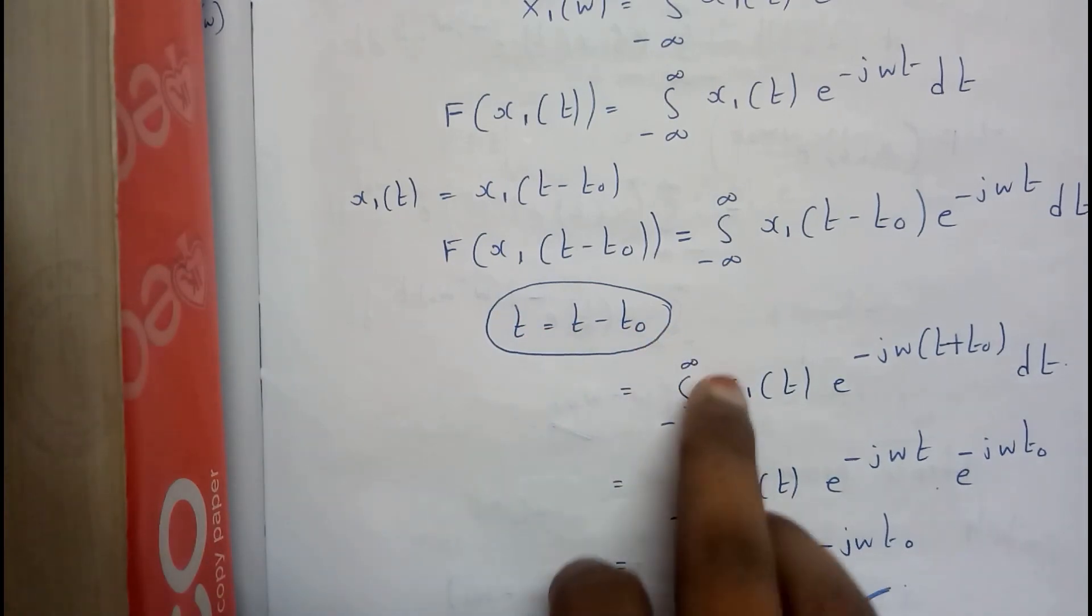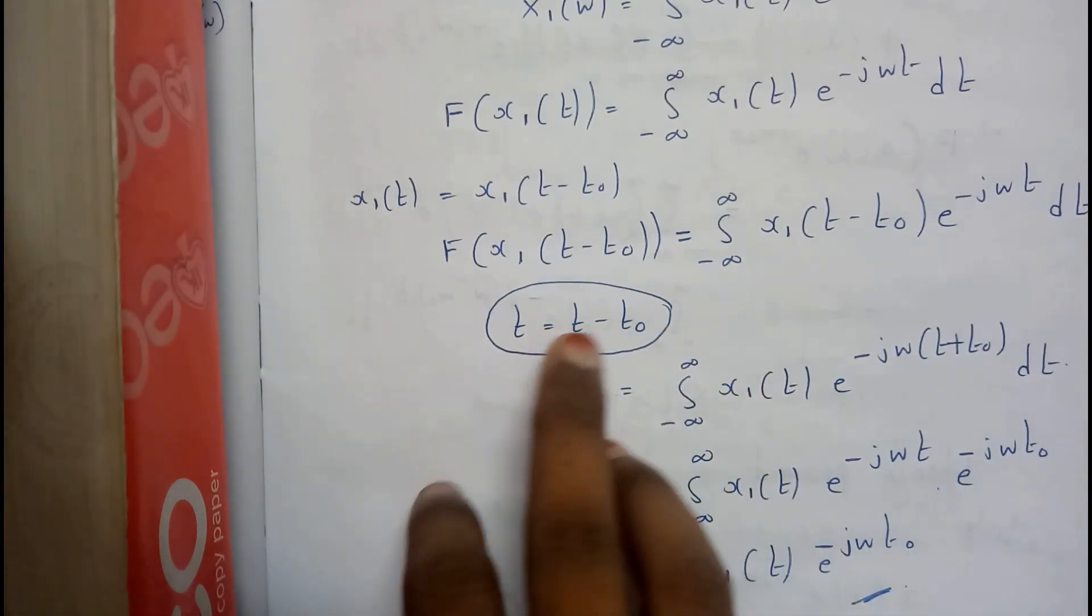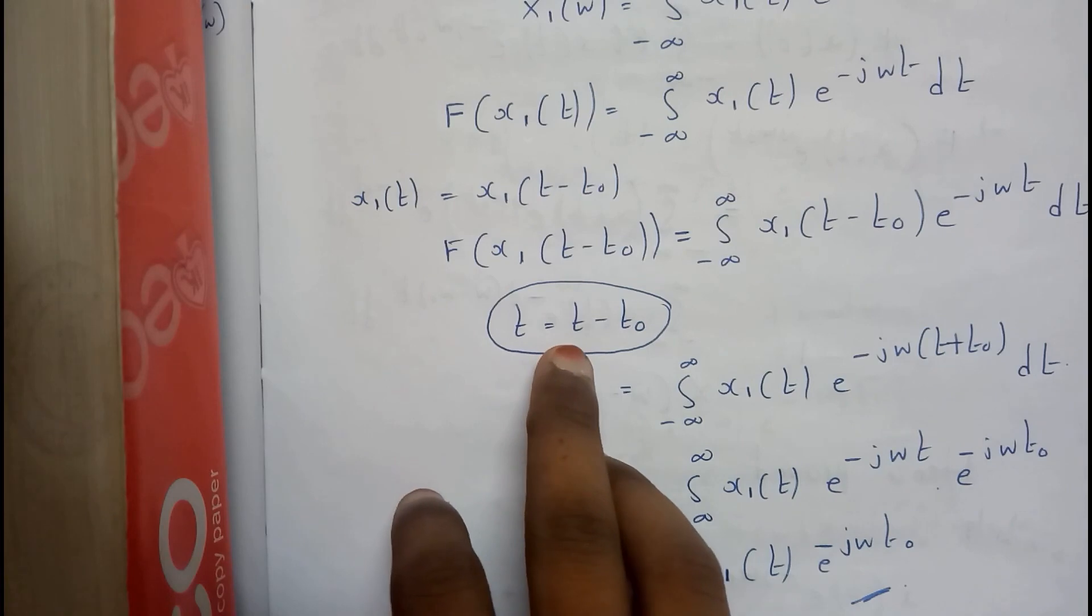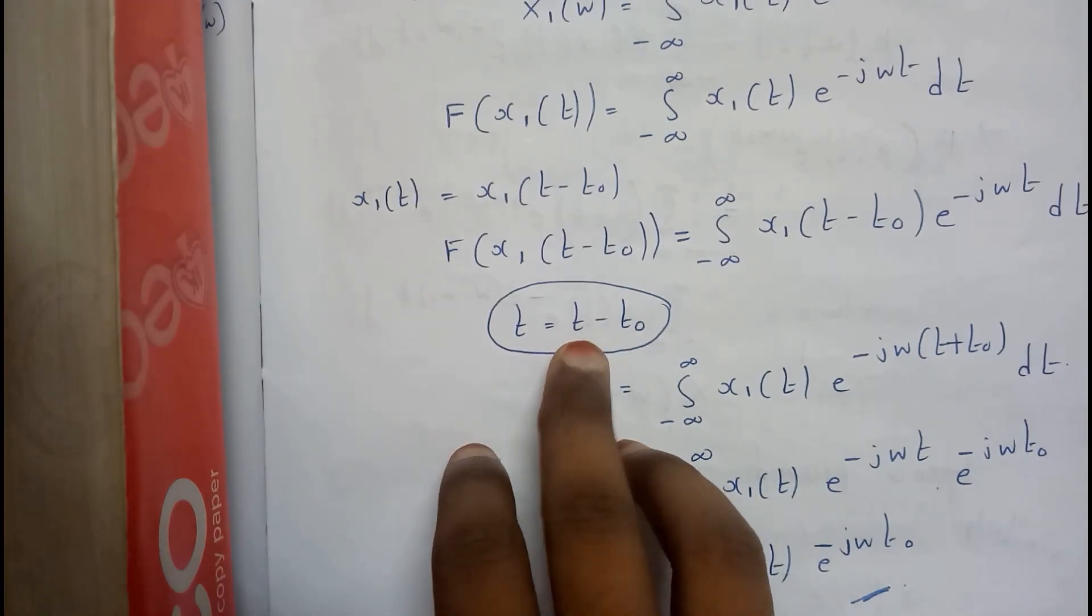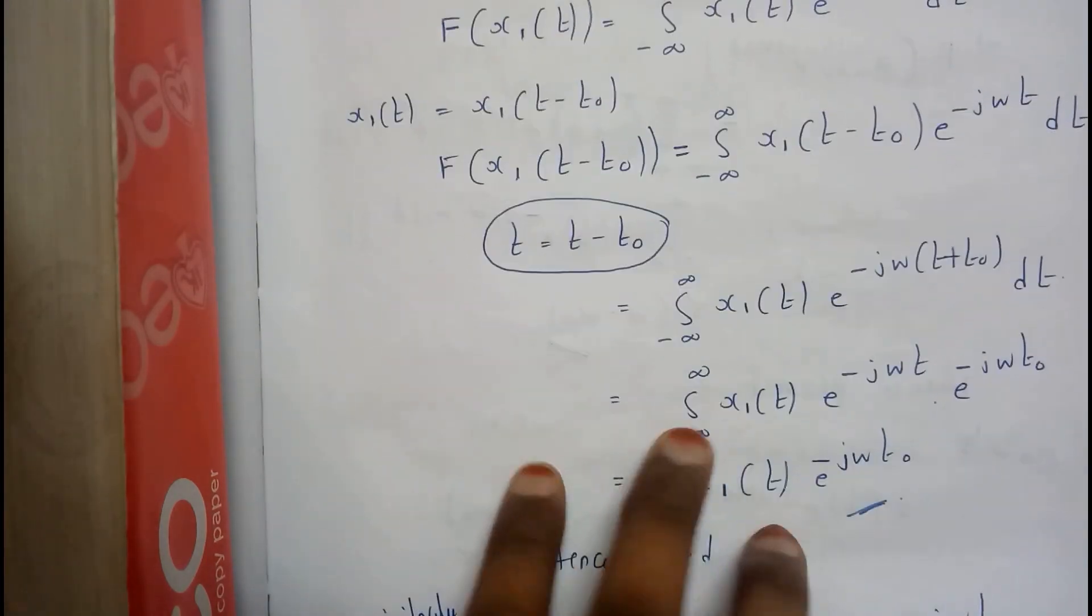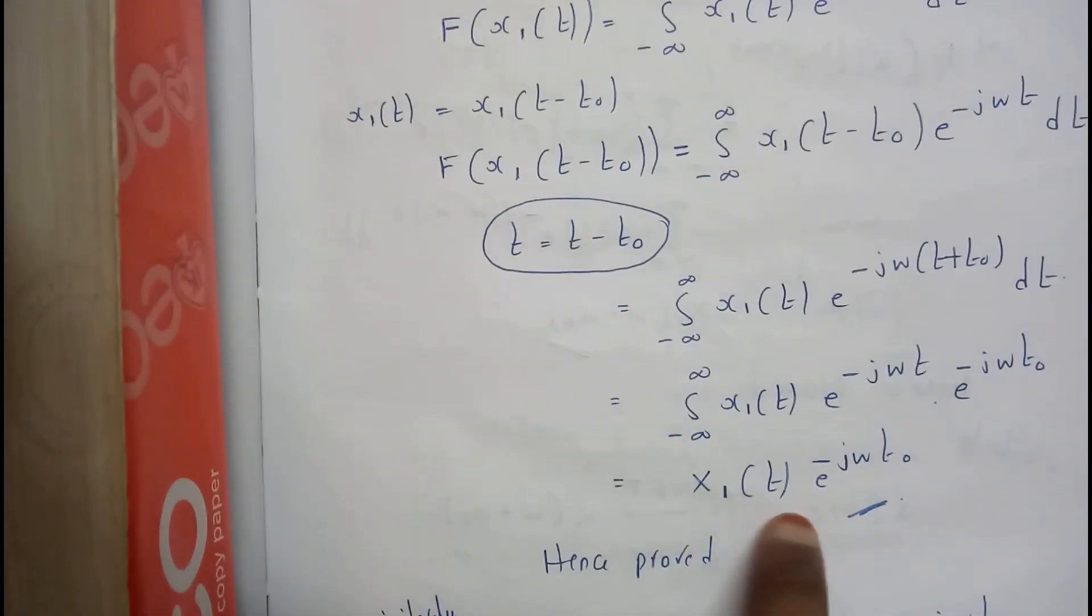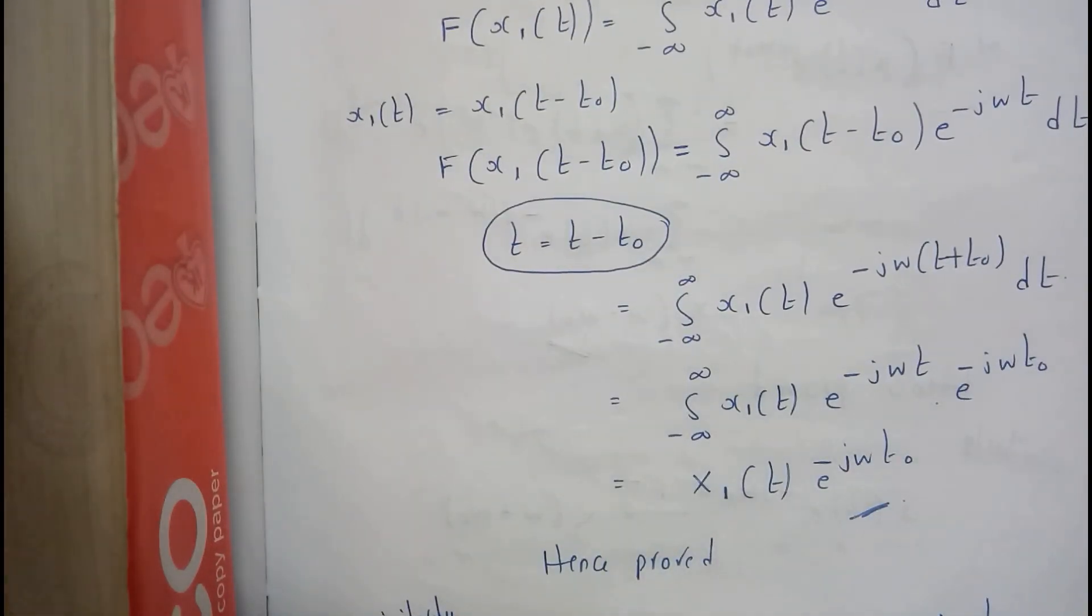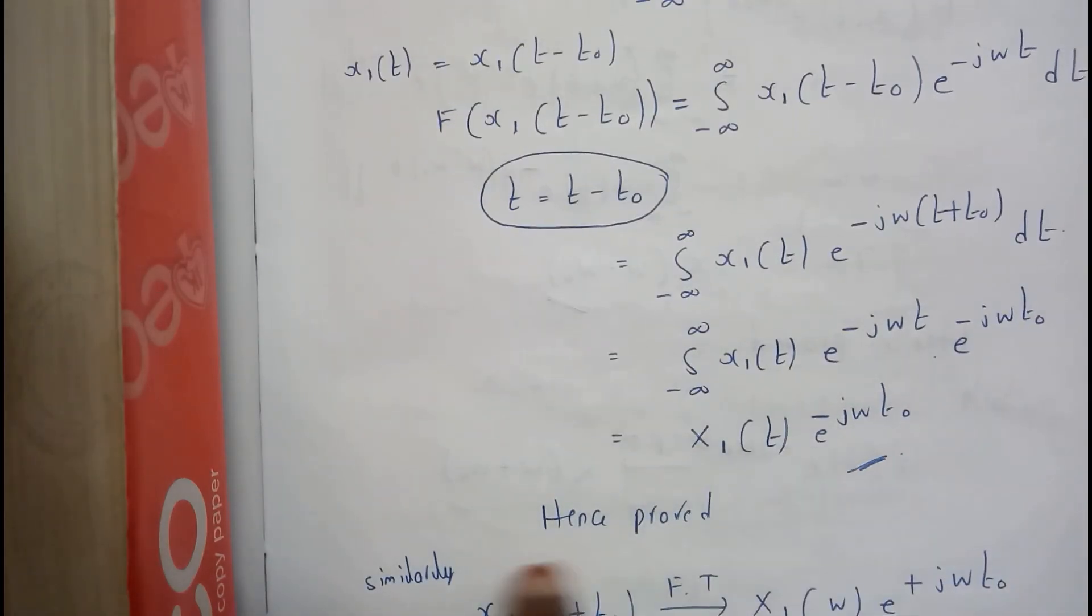So x equals t minus t₀, so this whole part becomes x. So when you find this t, that will be t₀ plus x. So these two will be matching. So we will be getting x₁ times e^(-jω(t₀+x)) which gives us x₁(t)e^(-jωt₀). So that's how we get this, guys. Hence proved.